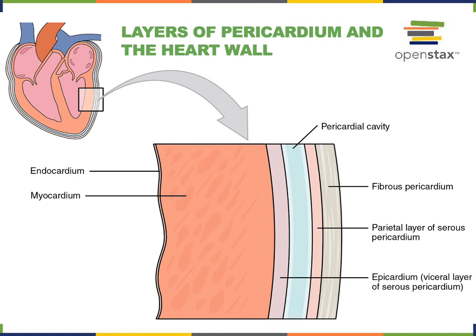The serous pericardium is a serous membrane, and the visceral layer is also a simple squamous epithelium, but this is also referred to as the epicardium, because there are three layers of the heart wall.